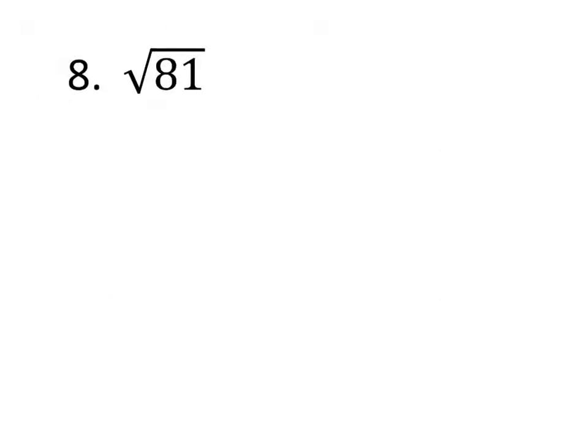All right, down to some square root fun. Again, no number written here, right? So the index is automatically defined as 2, so that means we're looking for just the square root. So the square root of 81, what number times itself makes 81? That's 9 times 9, right? So the square root of 81 is the number 9.